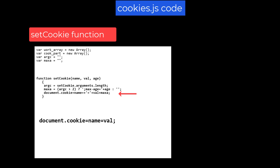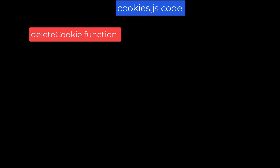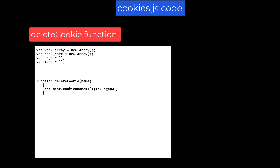The deleteCookie function: function deleteCookie(name), with the code: document.cookie = name + '=; maxAge=0'. This function is simple — one could do away with it — but it's easier to remember than the detail of adding the maxAge argument. Notice the subtlety: we've changed the value of the cookie to be null and set maxAge equals zero.